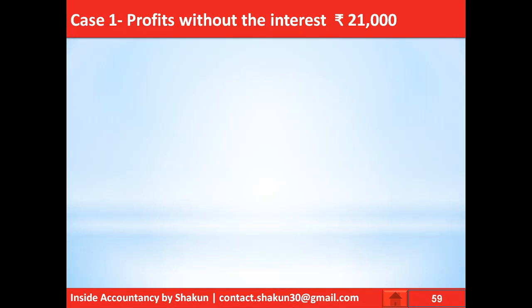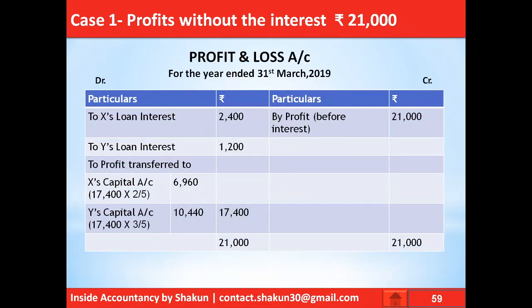In Case 1, profits before interest are 21,000. This is how the profit and loss account looks: profit is shown on the credit side as 21,000. Interest on loan calculated for X and Y is 2,400 and 1,200 respectively. Since interest is a charge, it is shown on the debit side of the profit and loss account regardless of the profit amount. This results in a divisible profit of 17,400, which is divided between X and Y in their profit sharing ratio of 2:3.